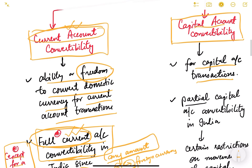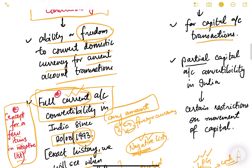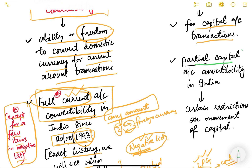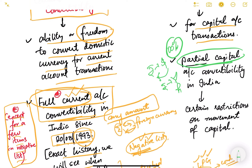When it comes to capital account convertibility, India has partial capital account convertibility — meaning it is not 100 percent. You cannot convert any amount of rupee into dollar, or any amount of dollar into rupee, or any amount of rupee into yen or pound. There are restrictions on conversion and on movement of capital.